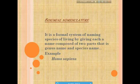The first word designates the genus and the second is the additional epithet that signifies the particular species within the genus. It is also known as the two-naming system or binary system.